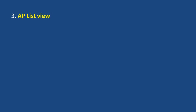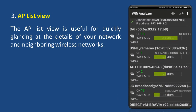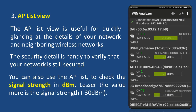AP list view. The access point list view is useful for quickly glancing at the details of your network and neighboring wireless networks — both my network and my neighbor's network. The security detail is handy to verify that your network is still secured; for example, WPA2 is the security option shown for this network. You can also use the access point list to check the signal strength in dBm — a signal strength of minus 49 dBm is shown here. The lesser the value, the more the signal strength.